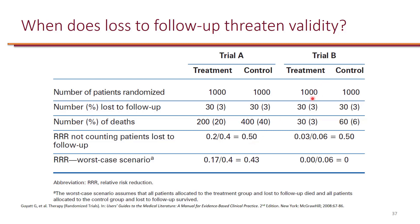Compare that to Trial B, which had the same number lost to follow-up, but far fewer deaths — only 30 patients in the treatment group and 60 in the control group, also resulting in a 50% relative risk reduction. To do sensitivity analysis, we can consider the worst-case scenario: assuming those 30 lost patients all died. When the number of deaths is very high, adding those numbers makes minimal difference.